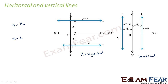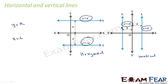So horizontal lines are parallel to the x-axis and the equation is of the form y is equal to k. Vertical lines are parallel to the y-axis and the equation is of the form x is equal to k. Please note: horizontal lines parallel to the x-axis have equation of the form y is equal to k; vertical lines parallel to the y-axis have equation of the form x is equal to k.